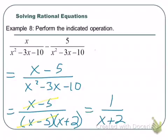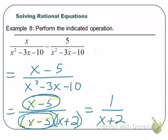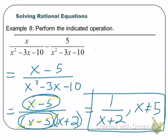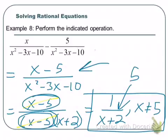Do we need to state any excluded values? Yes — because we canceled the x minus 5 factor, we need to exclude any value that makes it 0 over 0. So x cannot equal positive 5. Because positive 5 in the original gives 0 over 0, which is not equal to 1 over 7, we have to have this exclusion.